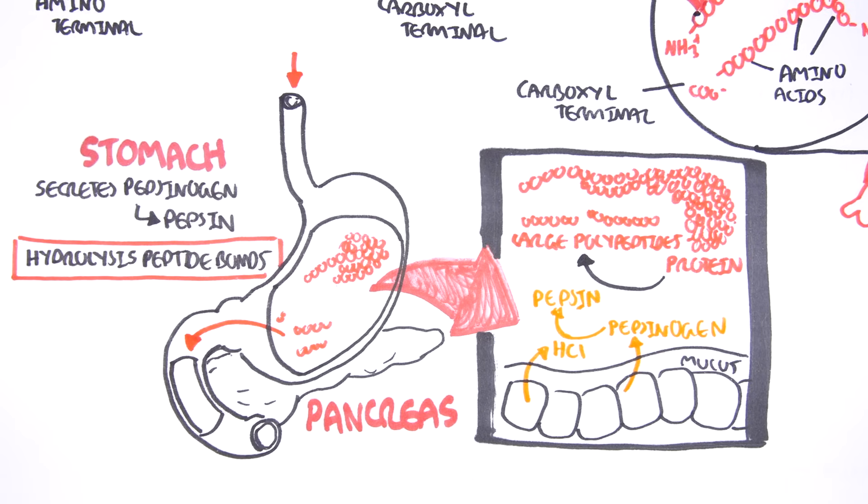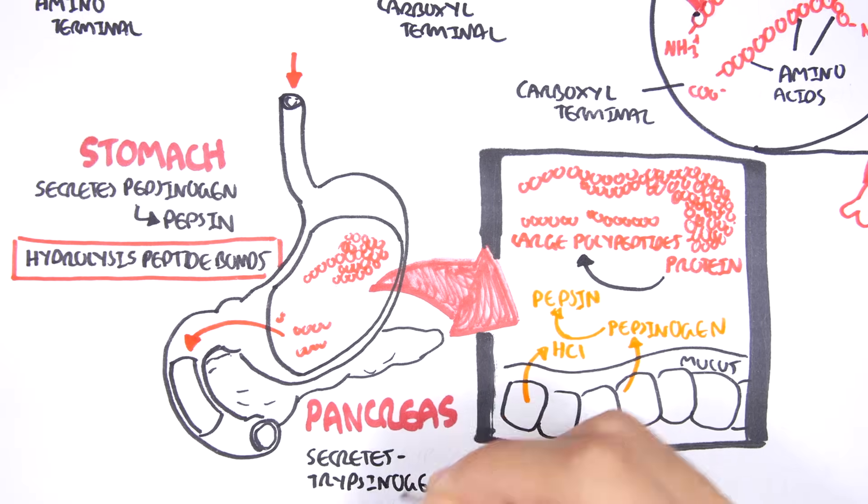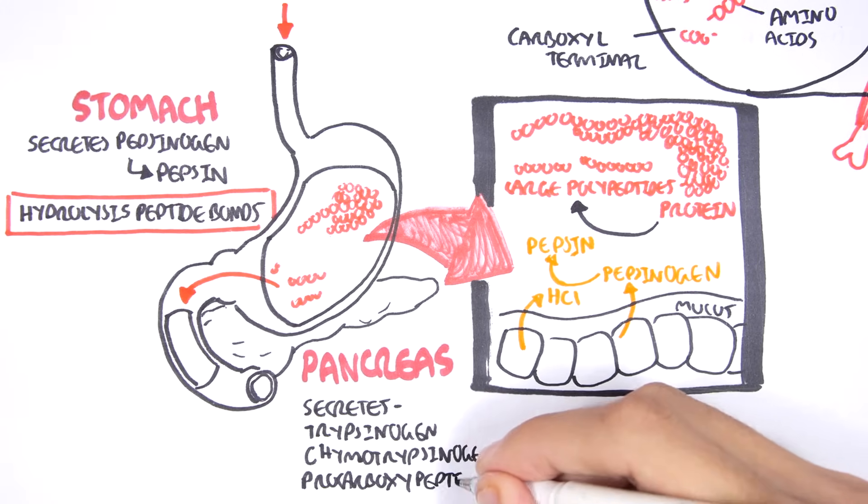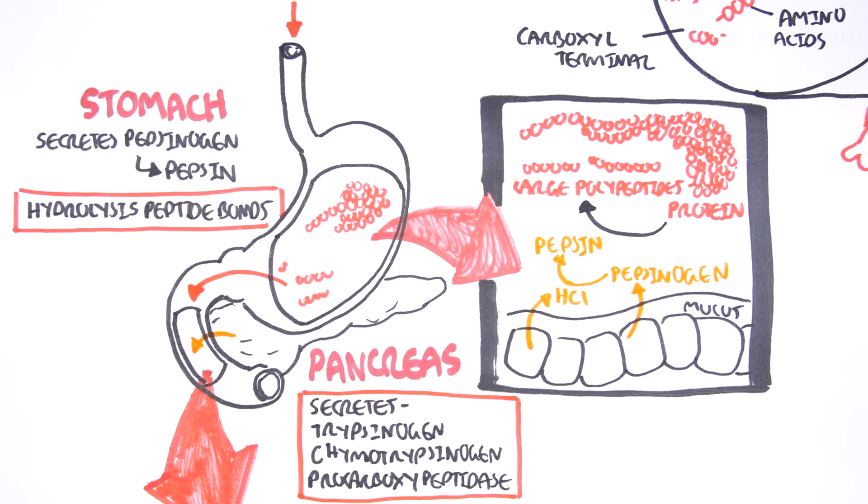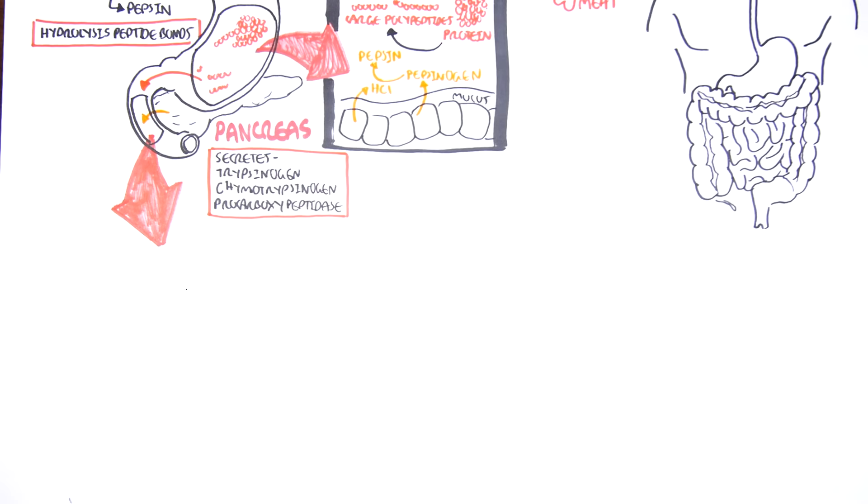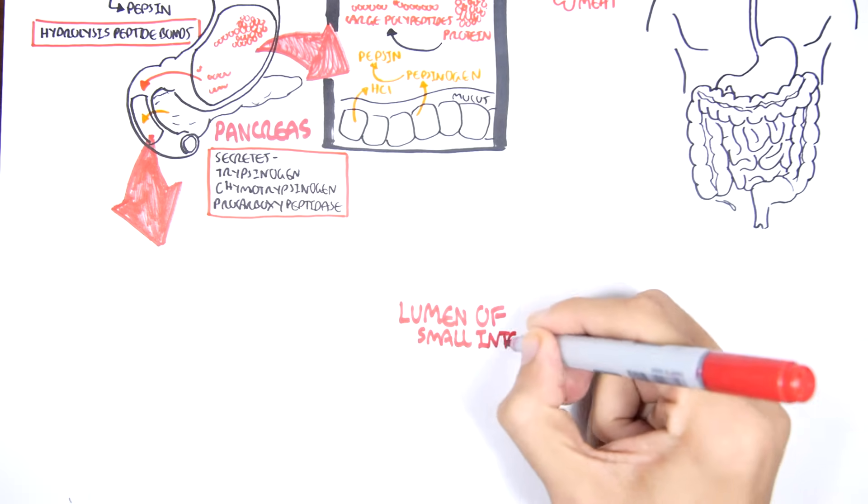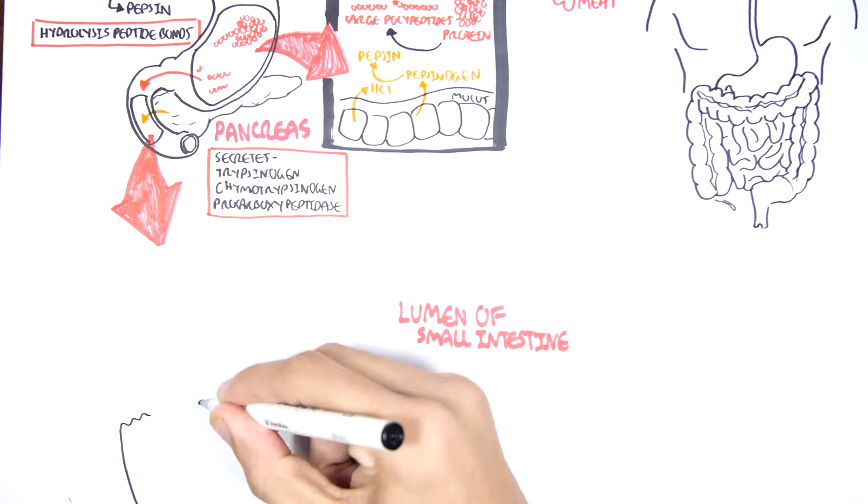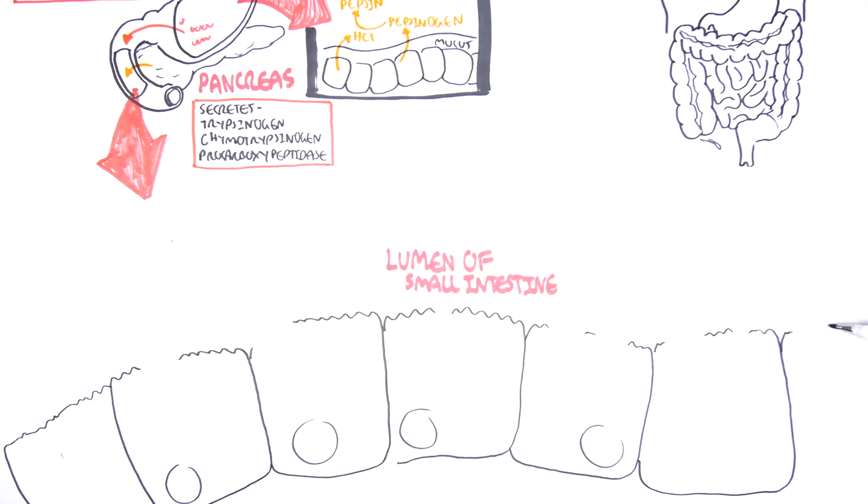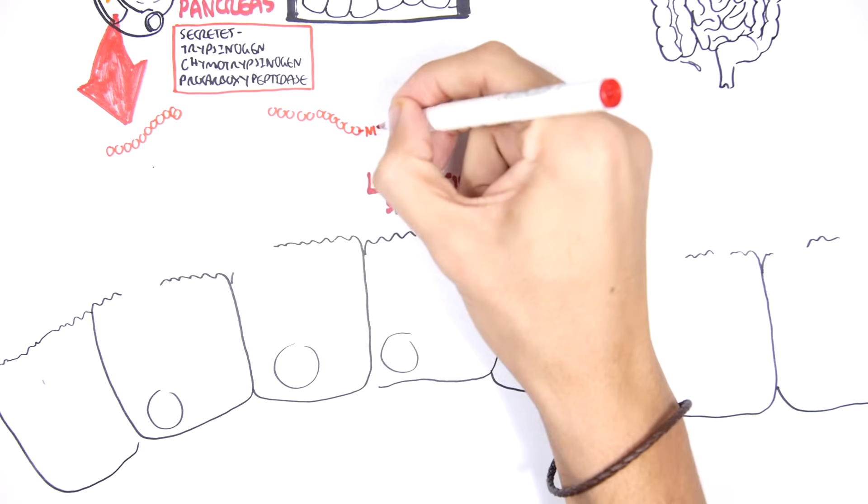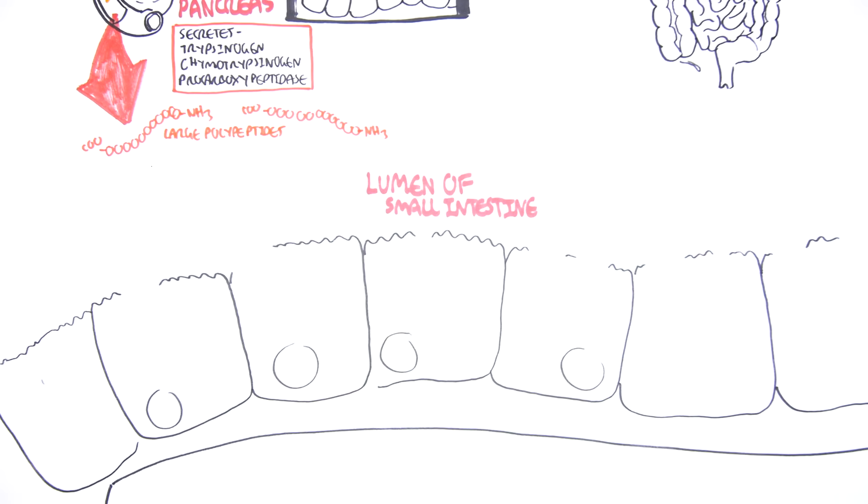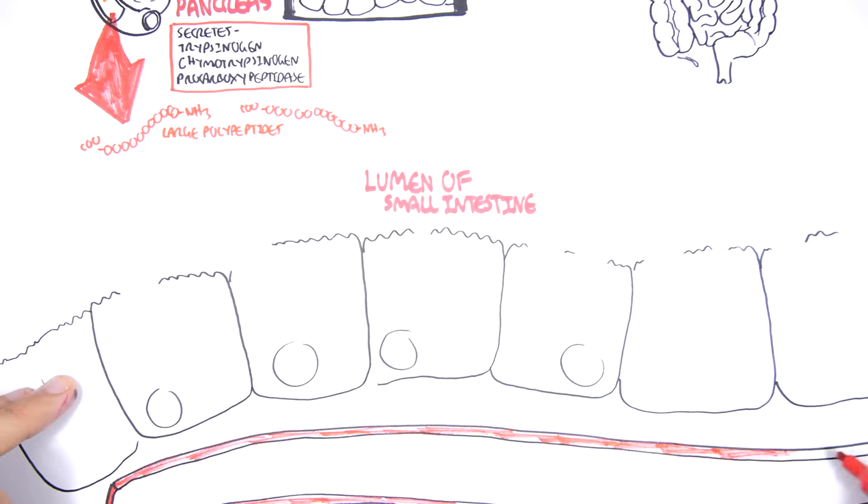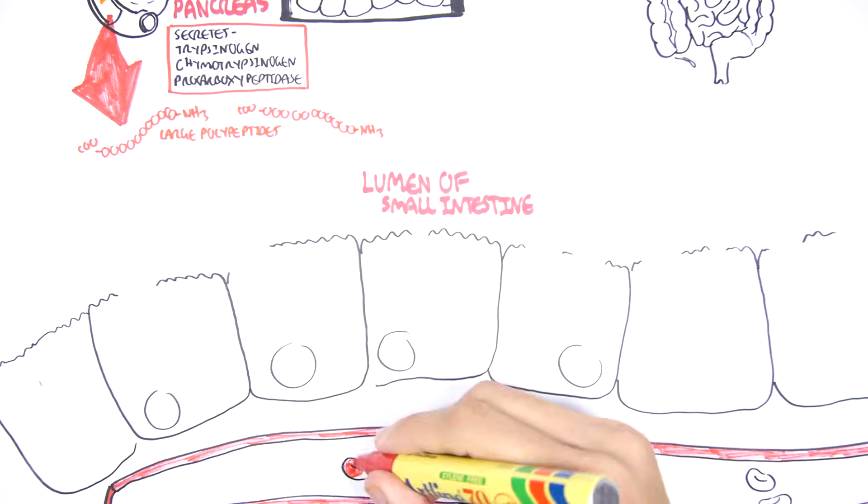The pancreas will actually begin to secrete some enzymes that will help digest the proteins. These are trypsinogen, chymotrypsinogen, and procarboxypeptidase. Zooming into the duodenum here, the first part of the small intestine, we are in the lumen of the small intestine. And here are the intestinal cells called enterocytes. And here are the large polypeptides that came from the stomach. Below the enterocytes, we have blood vessels that supply the enterocytes with blood and that will carry the nutrients to the liver once they are absorbed.